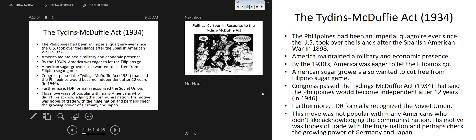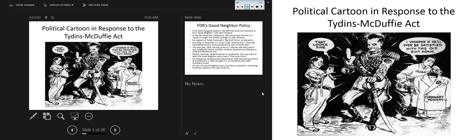During this period, FDR formally recognized the Soviet Union, which was not popular in America. Post-World War I and into the Depression era was America's first Red Scare, led by A. Mitchell Palmer — the fear that communism would spread to the United States. There were communist, anarchist, and socialist party factions in America during this time. This political cartoon responds to the Tydings-McDuffie Act, showing America as an imperial might in the Pacific.